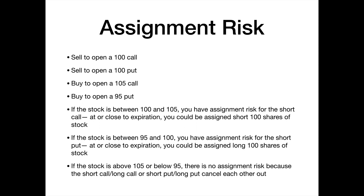If the stock is above 105 or below 95, there's actually no assignment risk — because you're short a call and long a call, or short a put and long a put, and those cancel each other out. If you do get assigned on the short call and end up short 100 shares, you're completely protected by that long call. Likewise, if assigned long 100 shares via the short put, the long put protects you and gives you time to trade out of it.